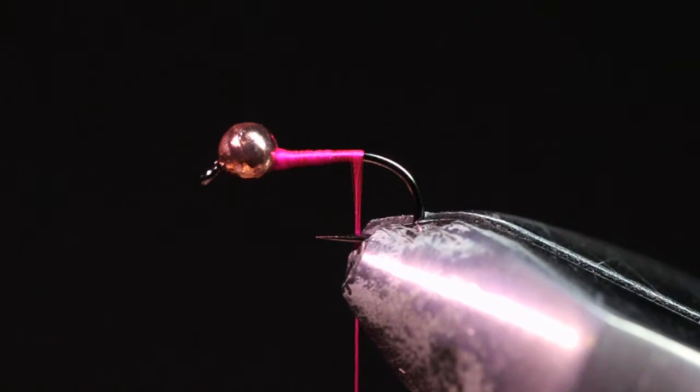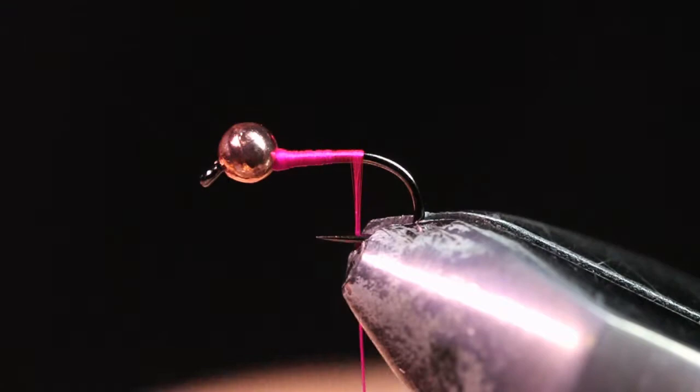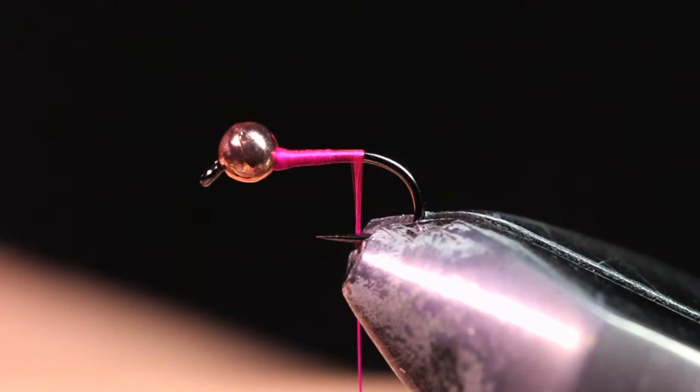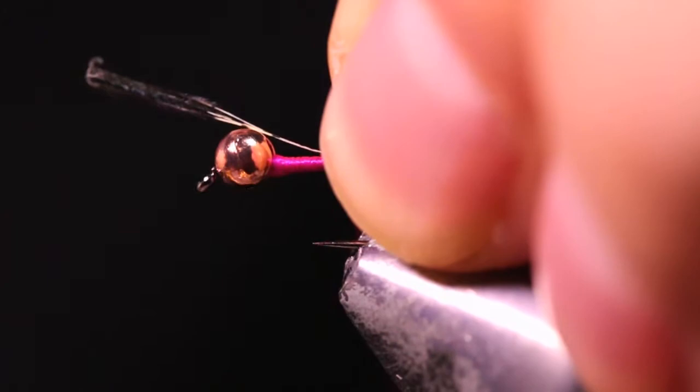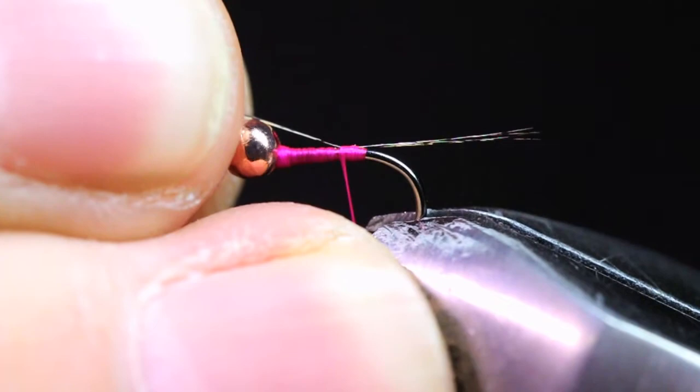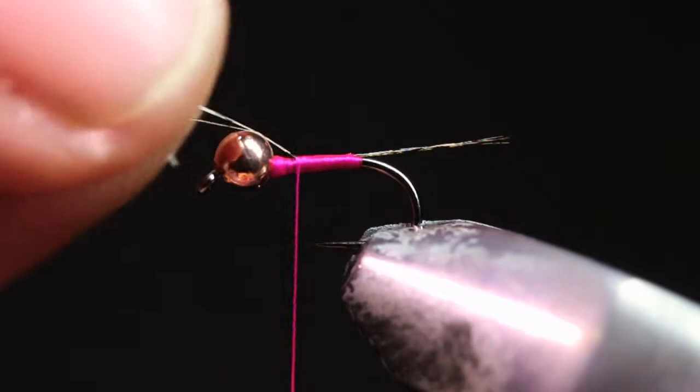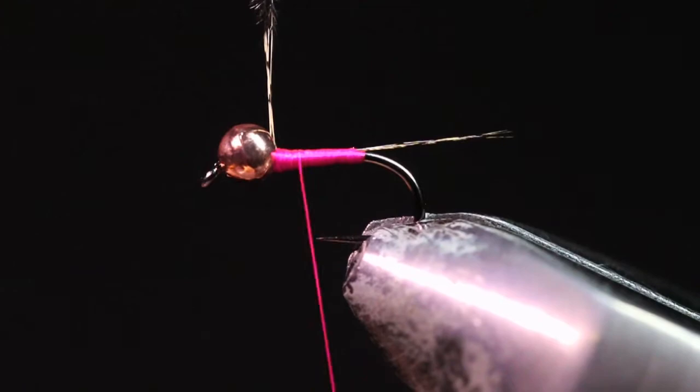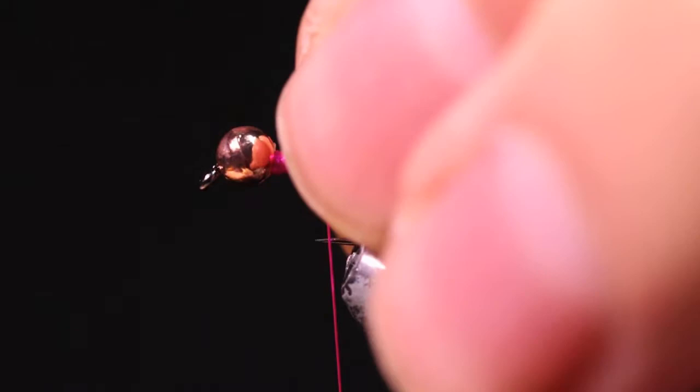So I'm going to take this thread back to about where the hook barb would be and we're going to be tying in our first material which is some Coque de Lyon. This is a light speckle and I'm just going to get roughly three to four fibers here. I'm not going to get much more than that. Try to aim around three or four since mayflies don't have a lot of tails. So I'm just going to keep these straight, pull them off the stem and we're going to tie in a tail about as long as the body. So I'm just going to tie these in. I can kind of pull this to length and you want to keep these fibers right on top of that hook shank. You want those tailing fibers to be coming right off the back of that hook right in the center. So I'm just going to cut out those butt sections there.